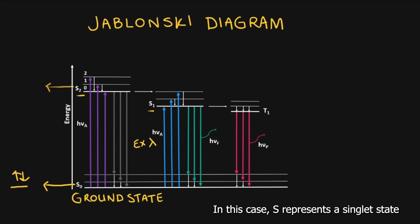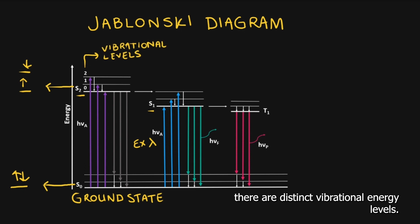In this case, S represents a singlet state, where the pair of electrons will always have opposite spin states. The transition that occurs depends on the wavelength of light used. Within these excited states, there are distinct vibrational energy levels.